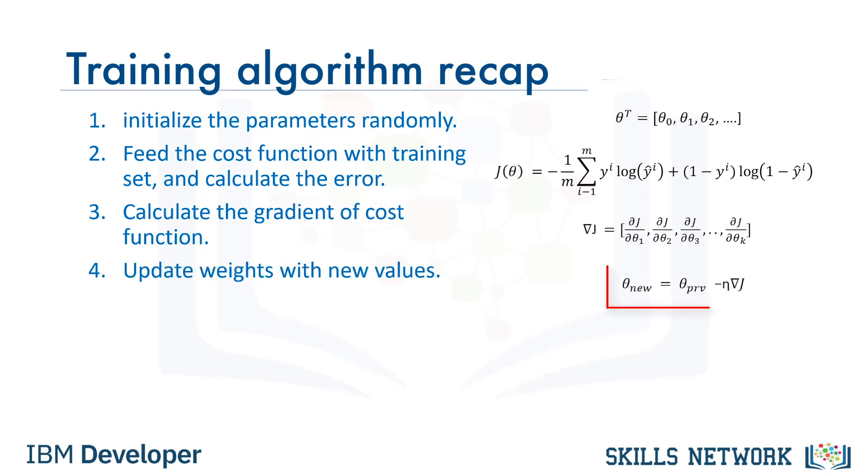Step 4. We update the weights with new parameter values. Step 5. Here we go back to step 2 and feed the cost function again, which has new parameters. As was explained earlier, we expect less error as we're going down the error surface. We continue this loop until we reach a short value of cost or some limited number of iterations.